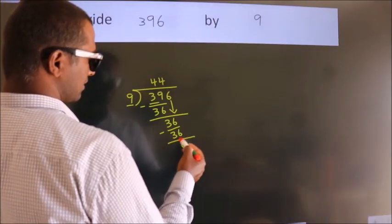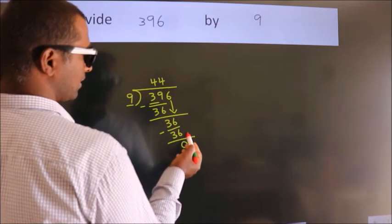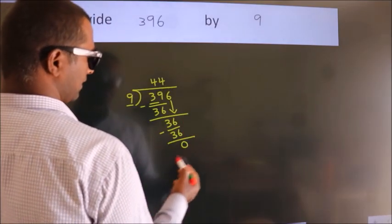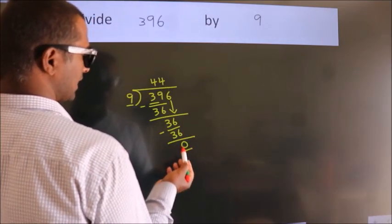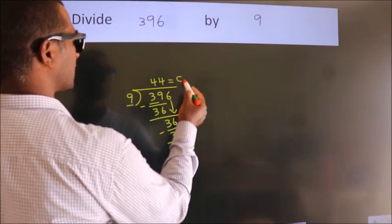After this, no more numbers to bring down. And we got remainder 0. So this is our quotient.